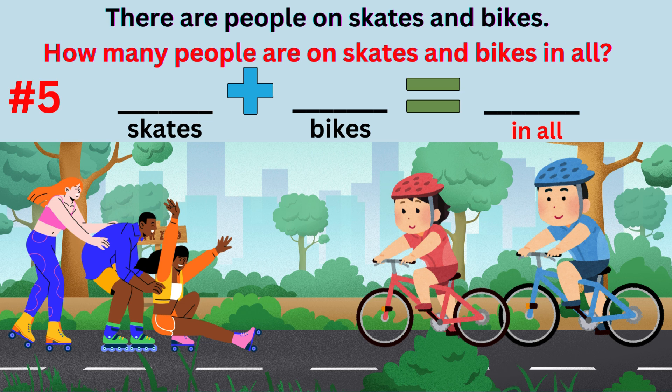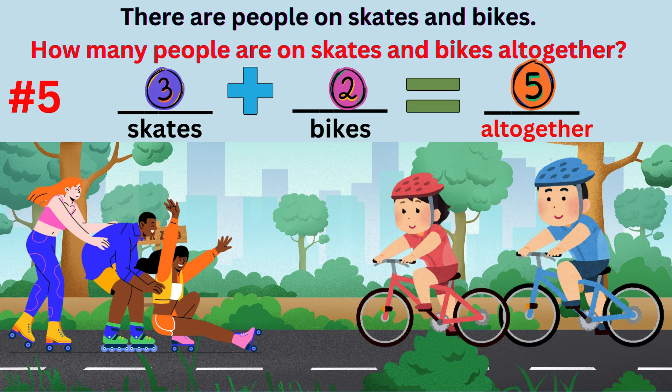Word problem number five. There are people on skates and bikes. How many people are on skates and bikes in all? The answer to the question is there are five people on skates and bikes in all. The addition sentence is three skaters plus two bikers equals five people on skates and bikes.